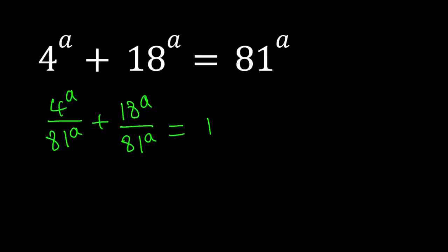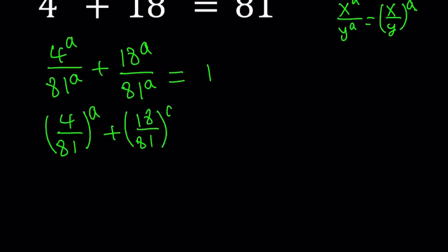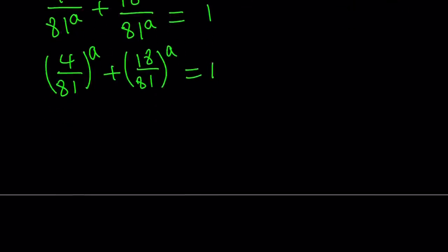So how do we simplify this? I have like x to the power a divided by y to the power a. I can definitely write it as x over y to the power a. So by using that property, we can write this as 4 over 81 to the power a plus 18 over 81 to the power a. And that equals 1. Now, 18 over 81 can be simplified. 18 over 81, the common factor is 9. So if you divide both the top and the bottom by 9, you're going to get 2 over 9.